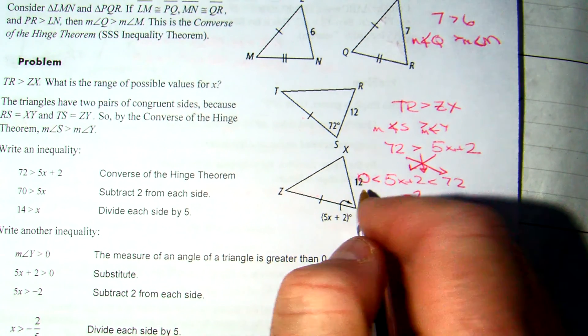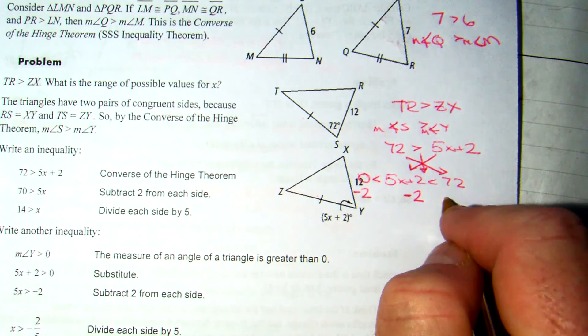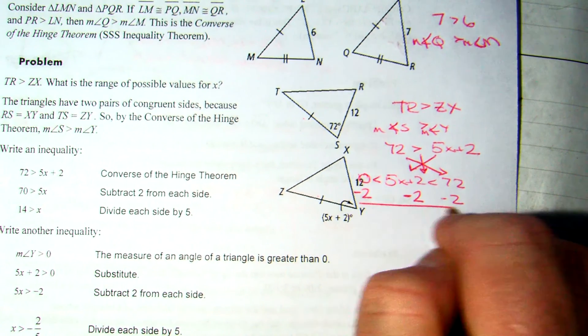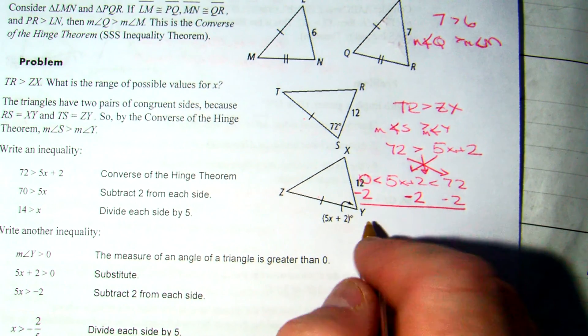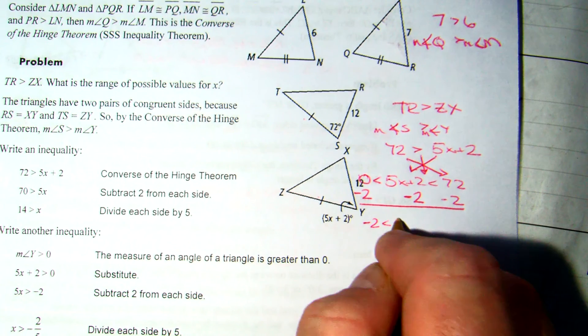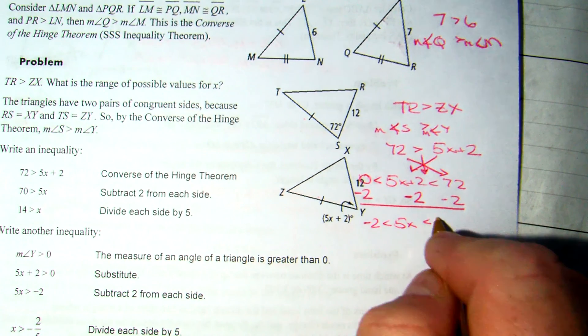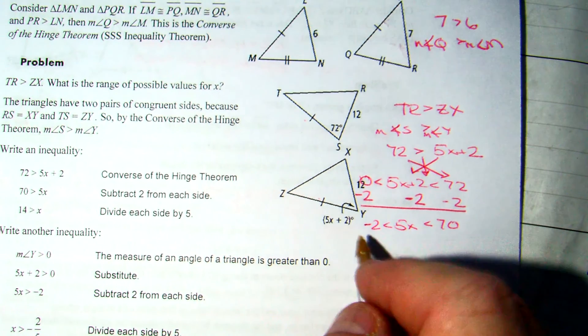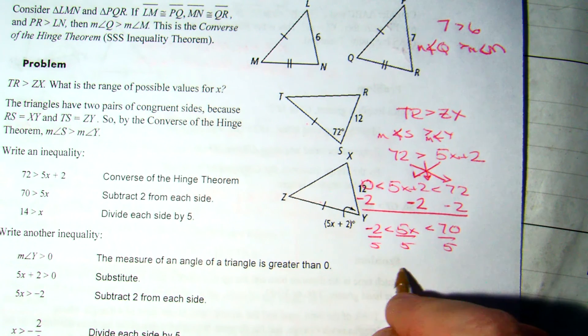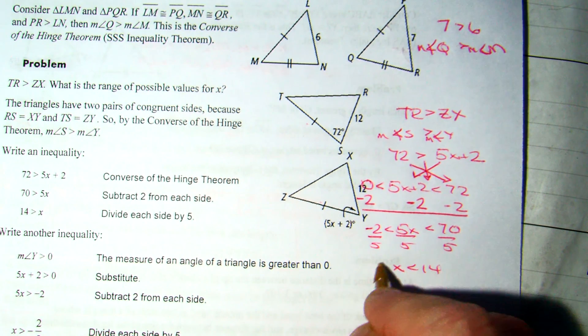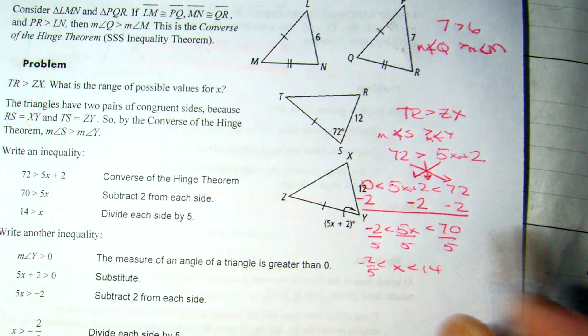One difference between compound inequalities and these equations is instead of doing it in two spots, you do it in three. Work on the left, center, and right. 0 minus 2 is negative 2. 2 minus 2 becomes 5X. 72 minus 2 is 70. Divide by 5. And I get X is less than 14 and greater than negative 2.